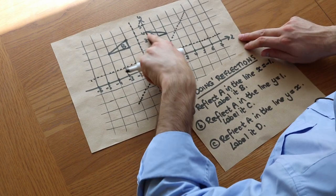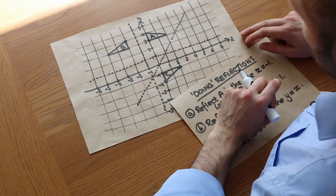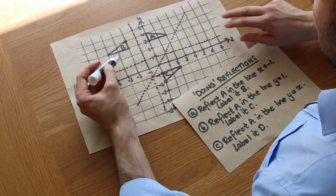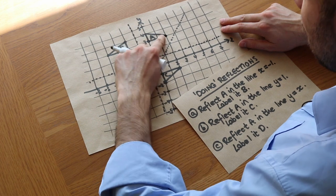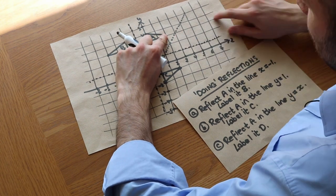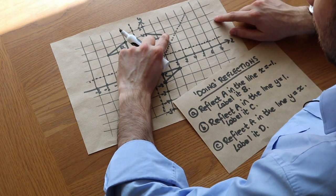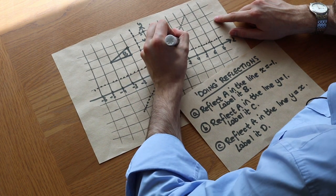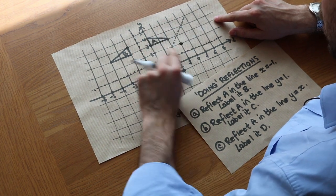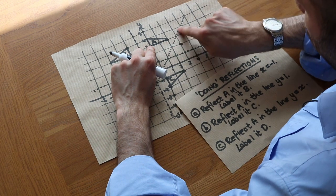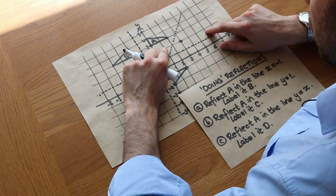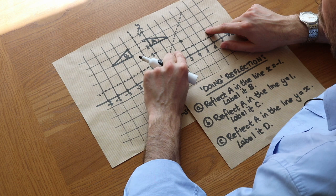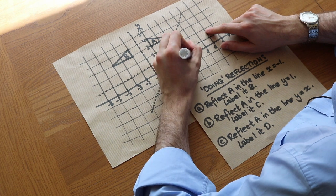Now we've got to reflect this shape in that diagonal line. This is a bit harder because you're going diagonally, but we still count the squares the same way. Looking at this first point — going directly towards the line of reflection, we're just going half a square, so we go half a square again and we're here. For this next point: one square and half a square to the line, then half a square and one square again — we're here.